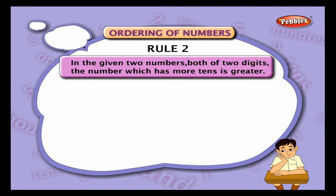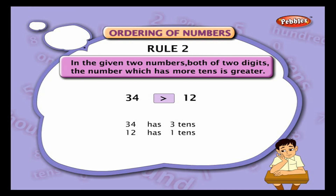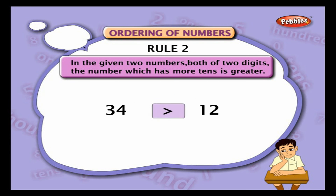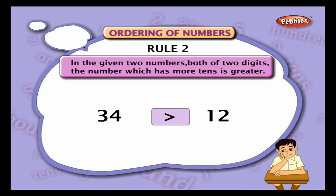Rule 2: in two numbers both of two digits, the number which has more tens is greater. For example, 34 and 12: 34 has three tens and 12 has one ten — three is greater than one, so 34 is greater than 12.